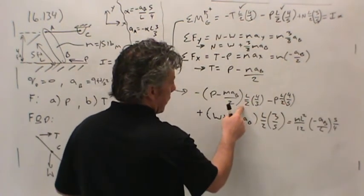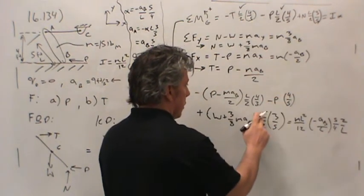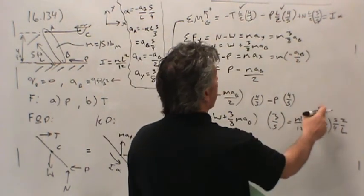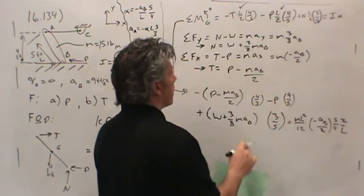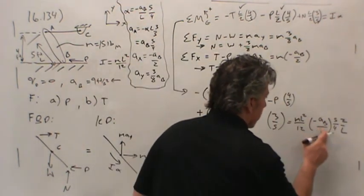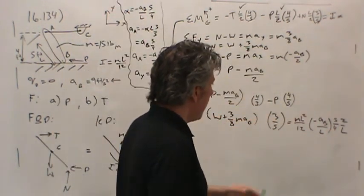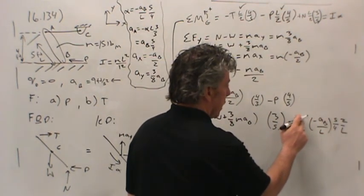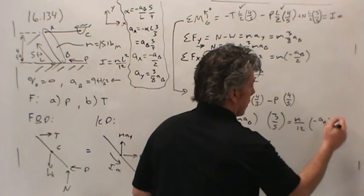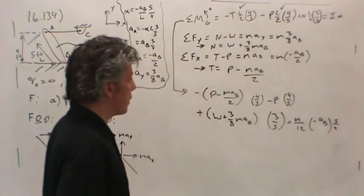The L over 2 appears in all three terms on the left. Multiplying both sides by 2 over L to simplify. Also multiplying both sides by 5 fourths to cancel the 4 fifths factors. After these simplifications, the L's cancel and we can solve for the unknowns P and T by continuing to expand and collect terms.